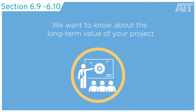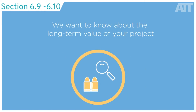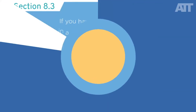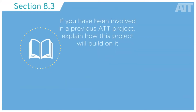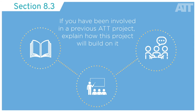So, using the earlier example of a customs workshop, the expected impact could be that 25 customs officials have increased capacity to identify ATT-controlled items and prevent their diversion to unauthorised users. If you have been involved in a previous ATT project, then you should explain how this project will build on it in Section 8.3.